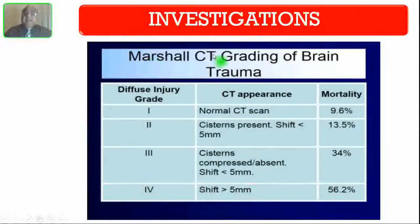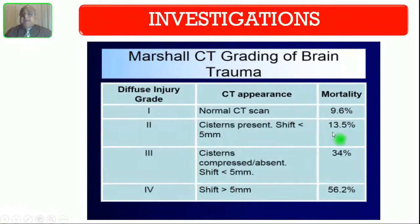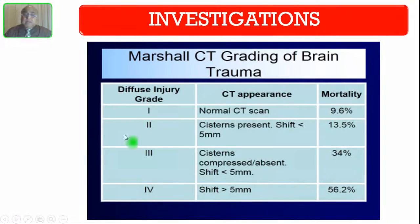This is the Marshall CT grading of brain trauma. Grade 1 is a normal CT scan with mortality of 9.6%. Grade 2: cisterns are present, shift is less than 5 mm, mortality 13.5%. Grade 3: cisterns are compressed or completely absent, shift less than 5 mm, mortality 34%. Grade 4: midline shift more than 5 mm, mortality 56.2%.